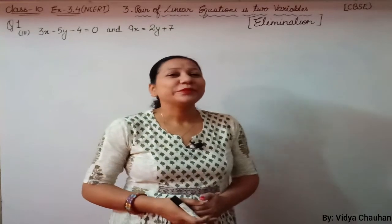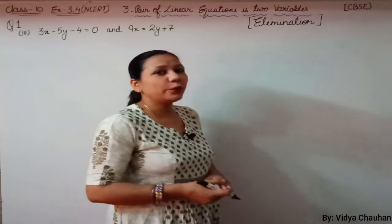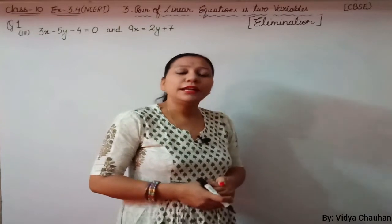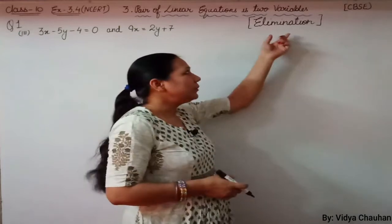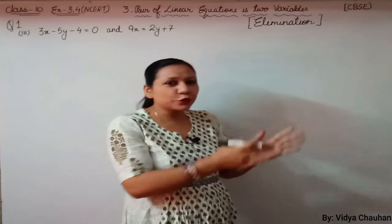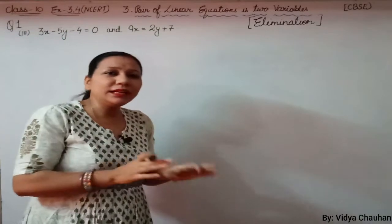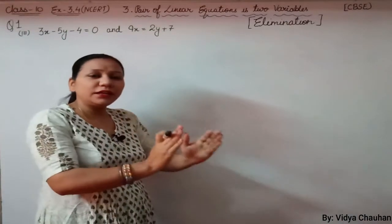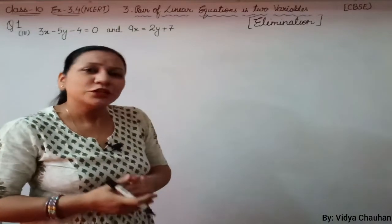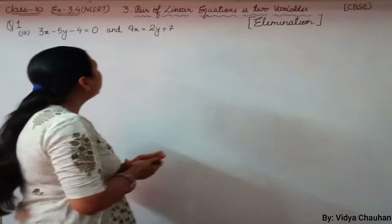Welcome back. Today in this lecture we are going to start with the second method of solving the linear equation, and that is the elimination method. In our previous lesson we discussed the substitution method. Elimination means to eliminate — to remove something from the equation. In elimination method, what we do is remove any one variable completely from the equation so that we can find the value of the second variable, whether it is x, y, or any other variable.